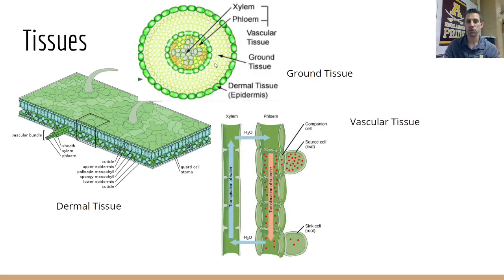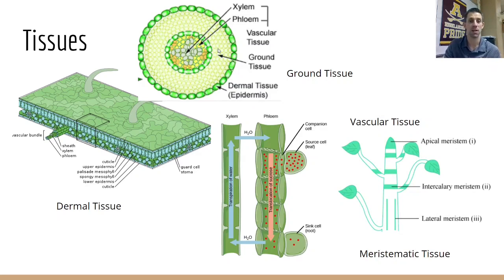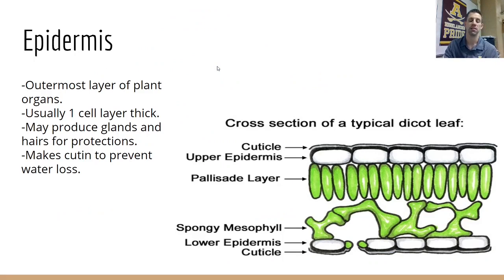There's vascular tissue — xylem and phloem — whose job is to move materials around inside the plant. Xylem moves water and phloem moves food. And then finally, meristematic tissue, which is the type of tissue that provides growth. These are the only cells that are actively dividing all of the time inside a plant.